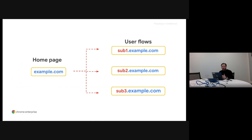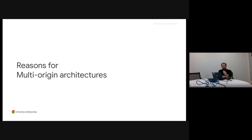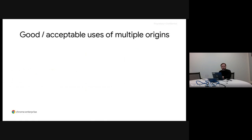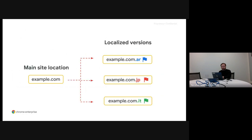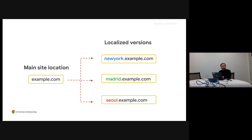Architectural decisions like this one often have important long-term implications on a PWA project. There are different reasons why many sites are built this way. We can consider some of them as acceptable practices, while others are not recommended. Let's start with the good or acceptable uses of multiple origins. The first one is localization — using a country code top-level domain to separate versions of your site served in different countries. You might also see subdomains used to divide sites targeted to different locations, for example different cities or countries. As long as the user doesn't move frequently across different origins, it's not a big problem.